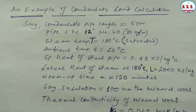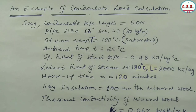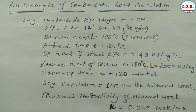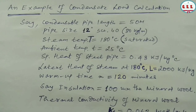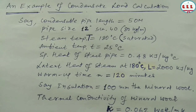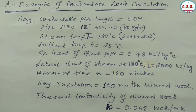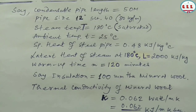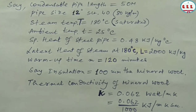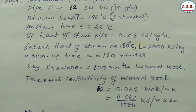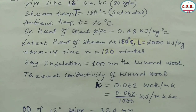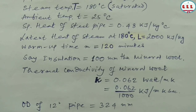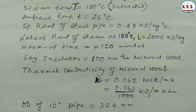Now let us take an example of condensate load calculation. Condensable pipe length = 50 m. Pipe size is 12 inch schedule 40, so pipe weight = 80 kg/m. Steam temperature T = 180°C (saturated). Ambient temperature t = 25°C. Specific heat of steel pipe = 0.48 kJ/(kg·°C). Latent heat of steam at 180°C, L = 2000 kJ/kg. Warm-up time M = 120 minutes.